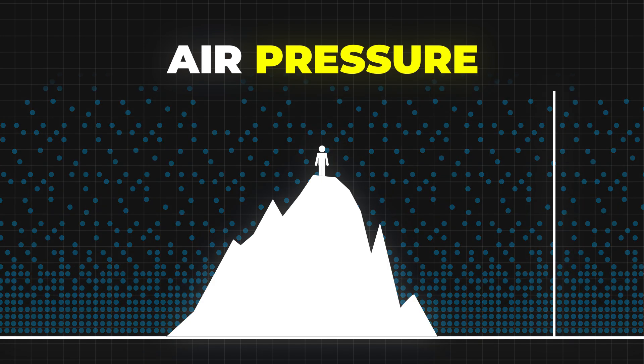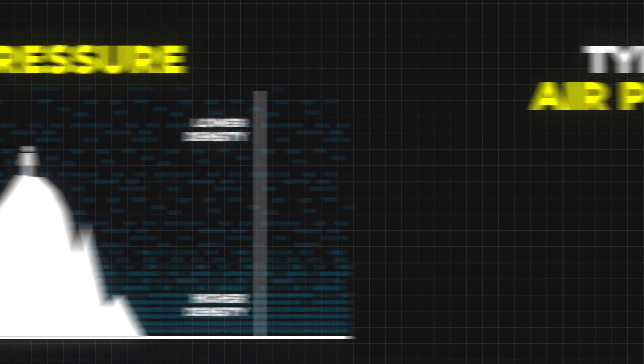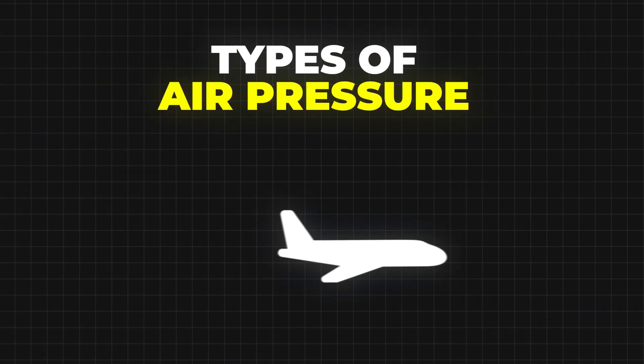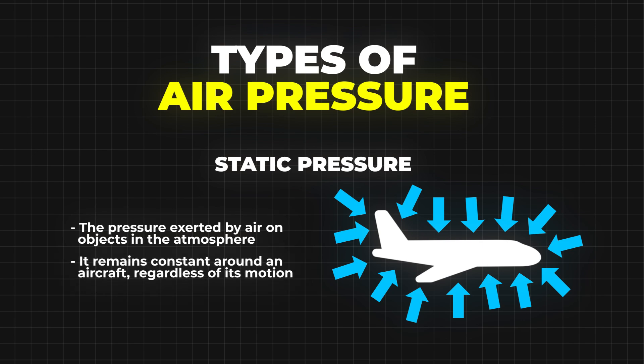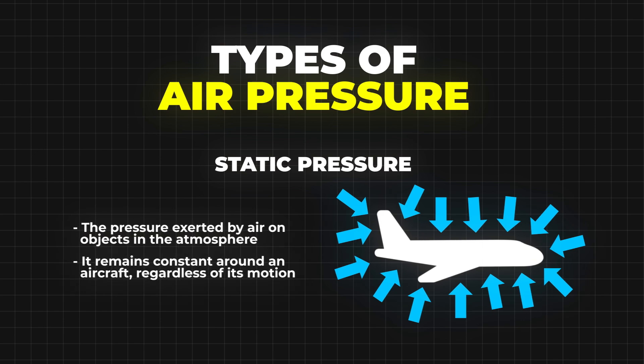This is because the higher you go, the fewer air molecules are present above you, exerting less force per unit area. There are two primary types of air pressure we encounter. Static pressure: this is the pressure exerted by a fluid — in this case air — when it's at rest. It remains constant around an aircraft at a specific altitude regardless of its motion.